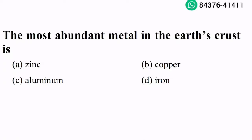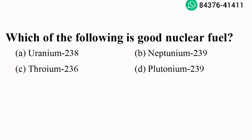The most abundant mineral in the earth's crust is aluminum. Option C is the right answer. Which of the following is a good nuclear fuel? Plutonium-239. Option D is the right answer.